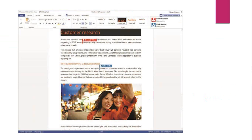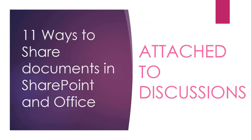Word also has co-authoring — you can see two different cursors for two different people making edits, with both names listed. Co-authoring is also available in Excel, Visio, and PowerPoint, though it works a little differently in each of those programs. We can show you a demonstration of that if you're interested.